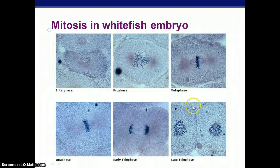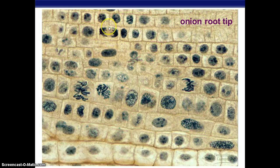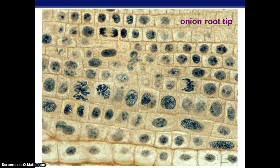An animal cell versus a plant cell — this is what we will actually get to look at in the lab. This is an onion root tip. You can see this might be prophase, metaphase, anaphase, and maybe a telophase here. The cell is not completely divided, and yet we can see that there are almost two new cells.